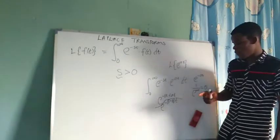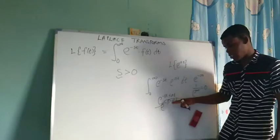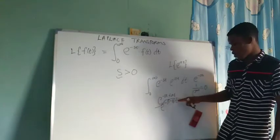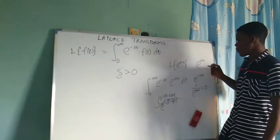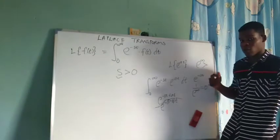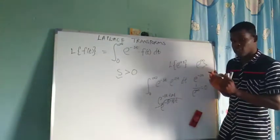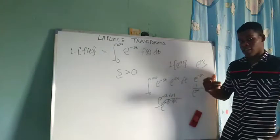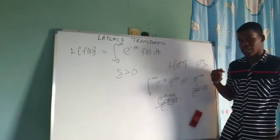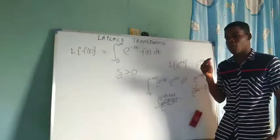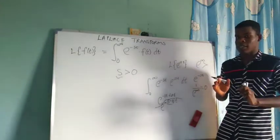But what happens if S minus A is negative? That simply means you're going to have negative times negative, which is positive, and e raised to positive infinity gets larger and larger. Therefore our integral will not converge. So for it to actually converge, we need a negative exponent, and for that to be possible S should be greater than A, and S should be greater than 0.